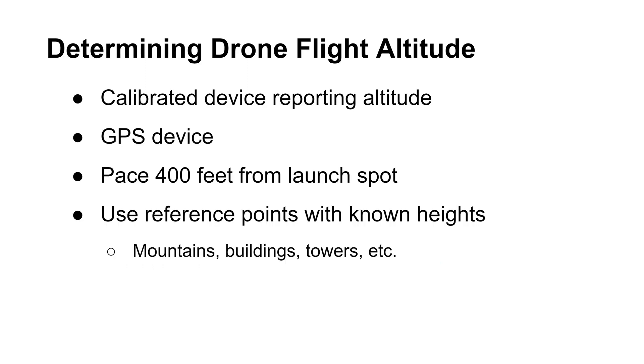The next topic I will cover is how to comply with the altitude limit of 400 feet above ground level or 400 feet above structure's top and around the structure. One way is to install a calibrated device or GPS capable of reporting altitude. You can also pace 400 feet from your launch spot to get a sense what a 400 foot distance looks like. It's also possible to use mountains, hills, or artificial structures with known heights above ground level as reference points. Sectional charts can help you identify the heights of these objects.